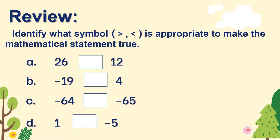Letter A: 26 blank 12. The answer is greater than — 26 is greater than 12. Letter B: negative 19 blank 4. The answer is less than — negative 19 is less than 4. For letter C: negative 64 blank negative 65. The answer is greater than — negative 64 is greater than negative 65. And finally, for letter D: 1 blank negative 5. It is greater than — 1 is greater than negative 5.